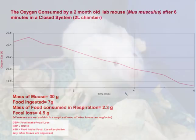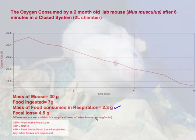How do we quantify the 2.3 grams listed as the biomass consumed in respiration? This graph shows that over a period of 6 minutes in the chamber, there was a measurable consumption of oxygen. Based on the change in the volume of oxygen, we were able to quantify the volume consumed by the mouse in approximately 24 hours. Using the relationships between the inputs and outputs of respiration, this translates into 2.3 grams of carbon metabolized by the cells of the organism to release the required energy.